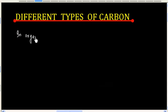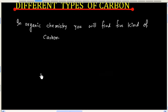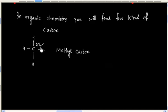In organic chemistry, you will find five kinds of carbon. The first carbon is called methyl carbon. This carbon is attached to 3 hydrogen atoms, and we call this carbon methyl carbon.